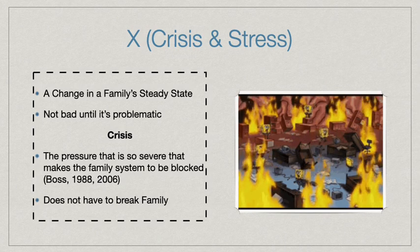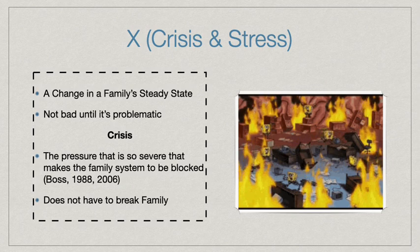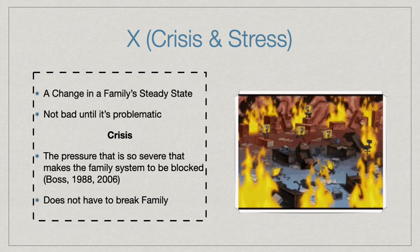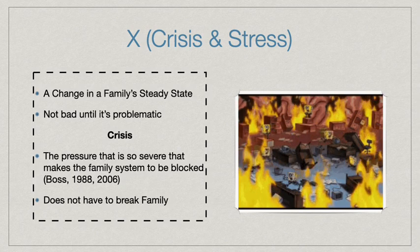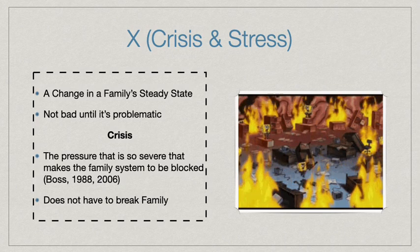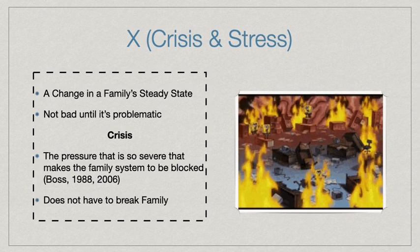Moving to crisis: crisis is a change in a family's steady state. However, crisis is not bad until it becomes problematic. Boss (1988-2006) describes crisis as a pressure so severe that it causes the family system to be blocked, but again, crisis does not always break the family. For example, there's a SpongeBob episode where he forgets someone's name and his brain goes into crisis and catches fire.